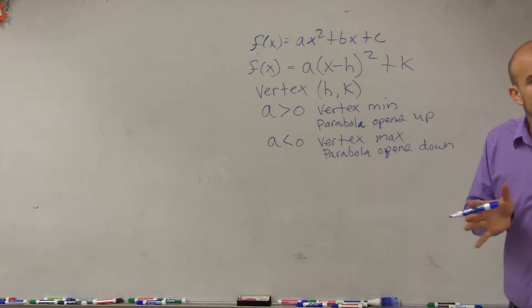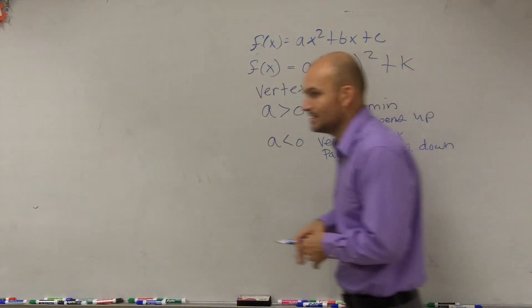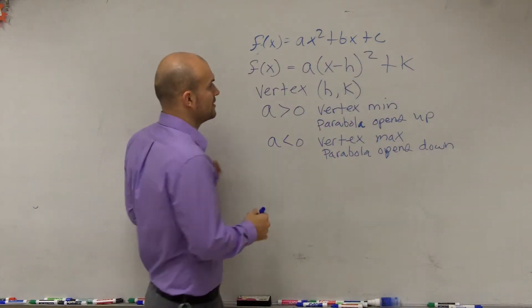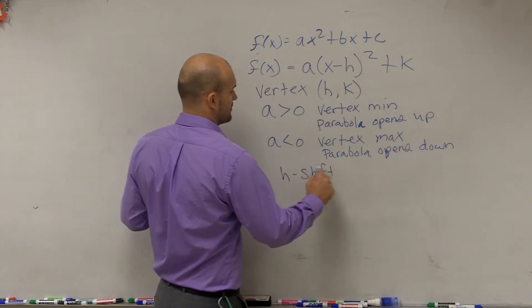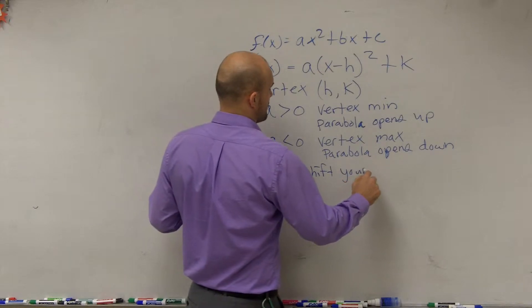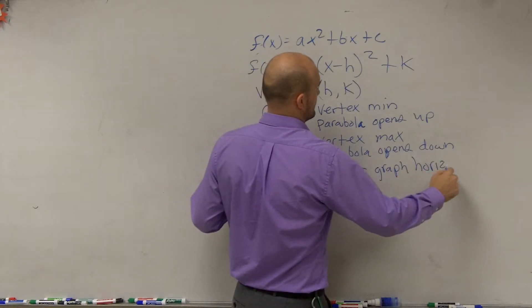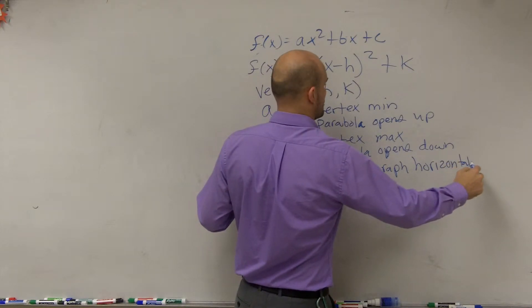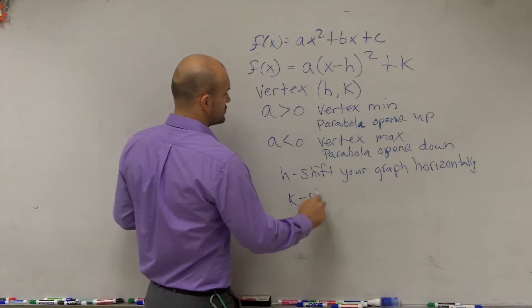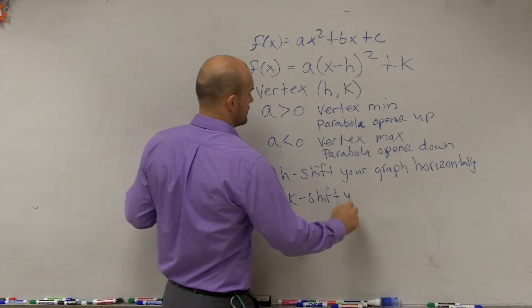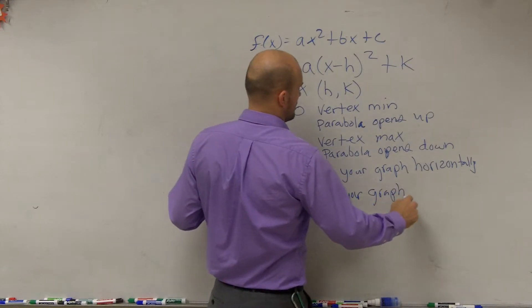Well, if we have a new vertex, the h and the k, you can see, they're going to move where the vertex is going to be. But I will explain what h and k are going to do real quick. So your h, if you guys remember, is going to shift your graph horizontally. And k is going to shift your graph vertically.